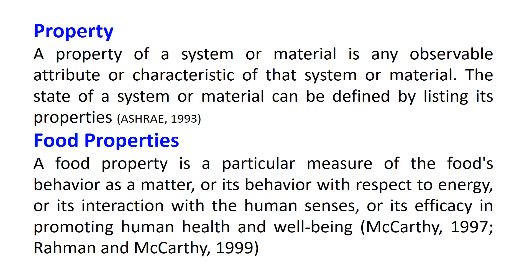Now, what are the food properties? First, let's see what a property is. A property of a system or material is any observable attribute or characteristic of that system or material. The state of a system or material can be defined by listing its properties. A food property is a particular measure of the food's behavior as matter, or its behavior with respect to energy, or its interaction with the human senses, or its efficacy in promoting human health and well-being. We always need to preserve food properties at a desired level for a specific time frame. Food properties encompass the functionality of foods and have wider perceptions and viewpoints.